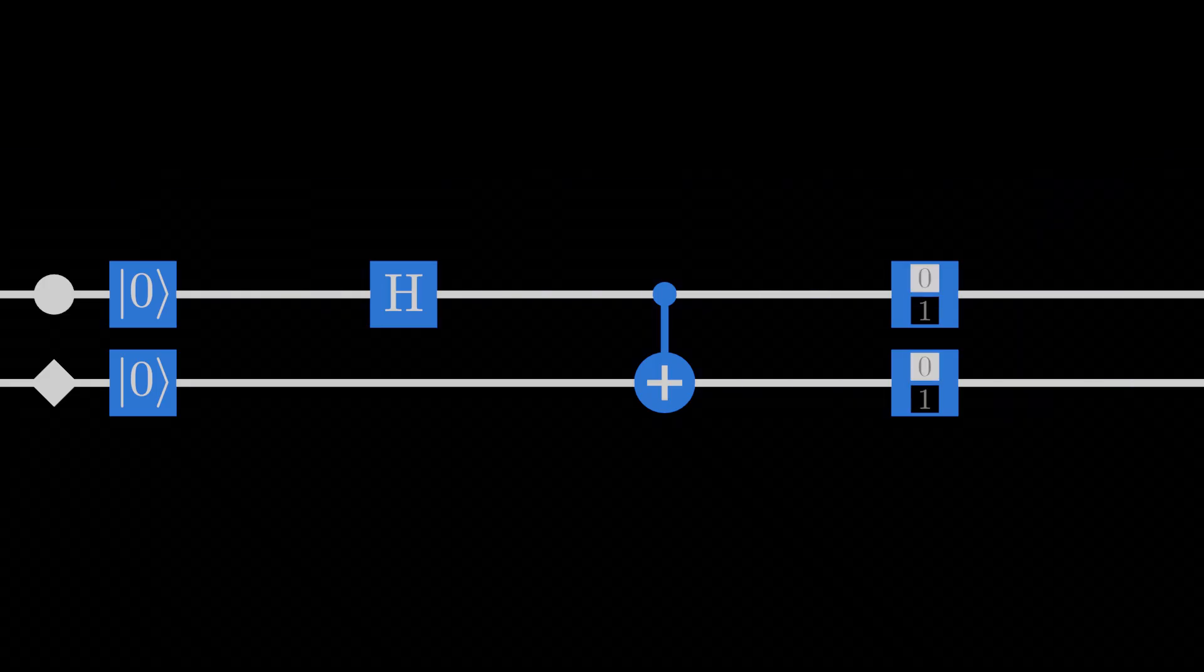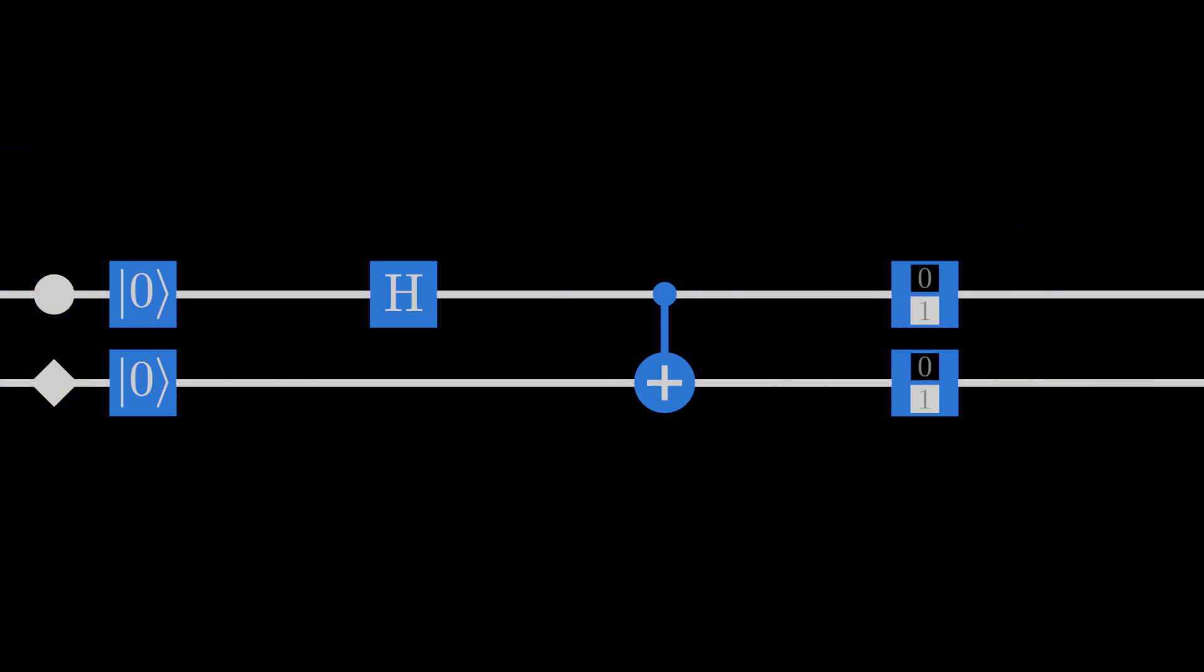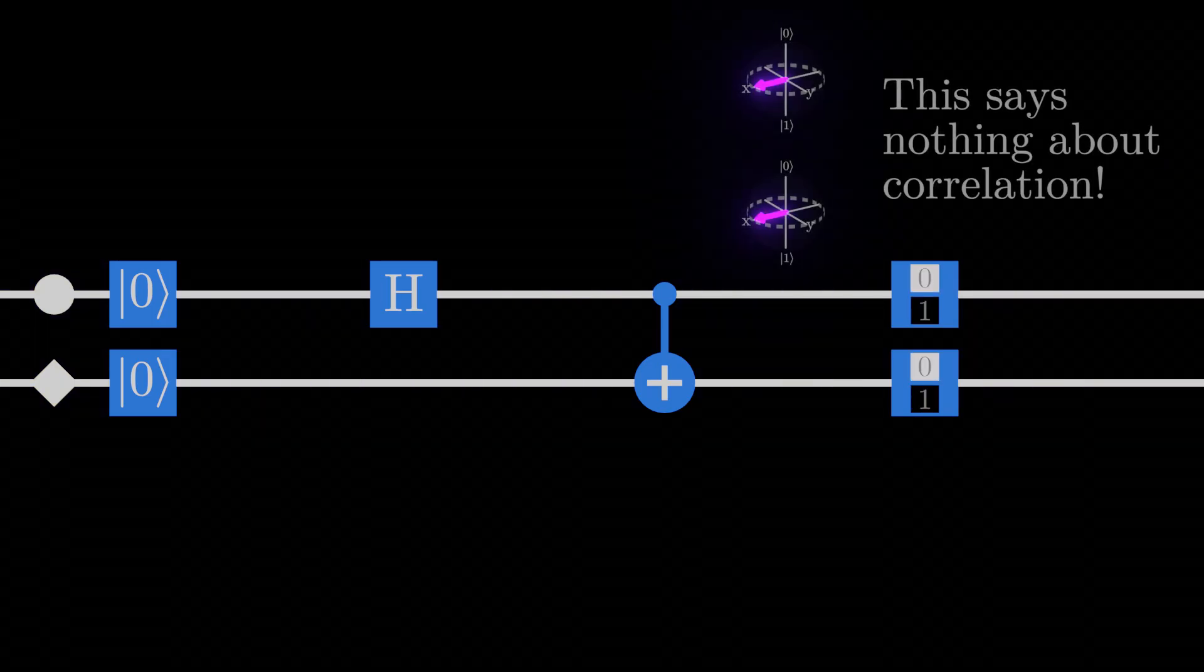This ability for multiple measurements to be correlated is an essential property of entanglement. It tells us that the behavior of qubits together can't be explained by describing each qubit individually.